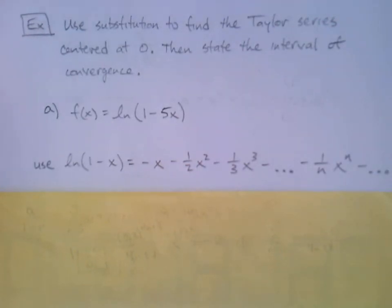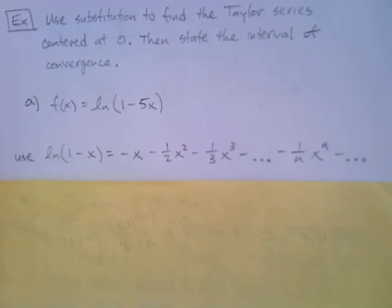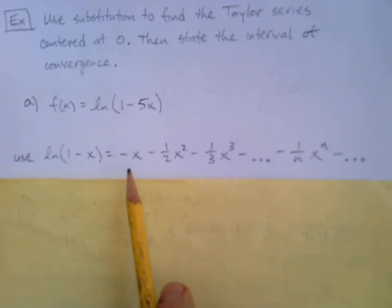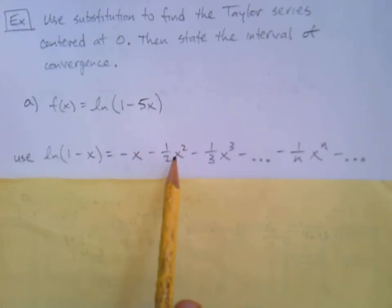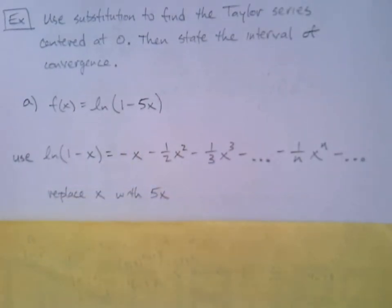And we're going to leverage that one. So we're going to use the natural log of 1 minus x, and I've just gone ahead and repeated that. Obviously that's in the table, so you wouldn't have to repeat this in your own work on a test. What are we going to do? We're literally just going to replace the x with 5x.